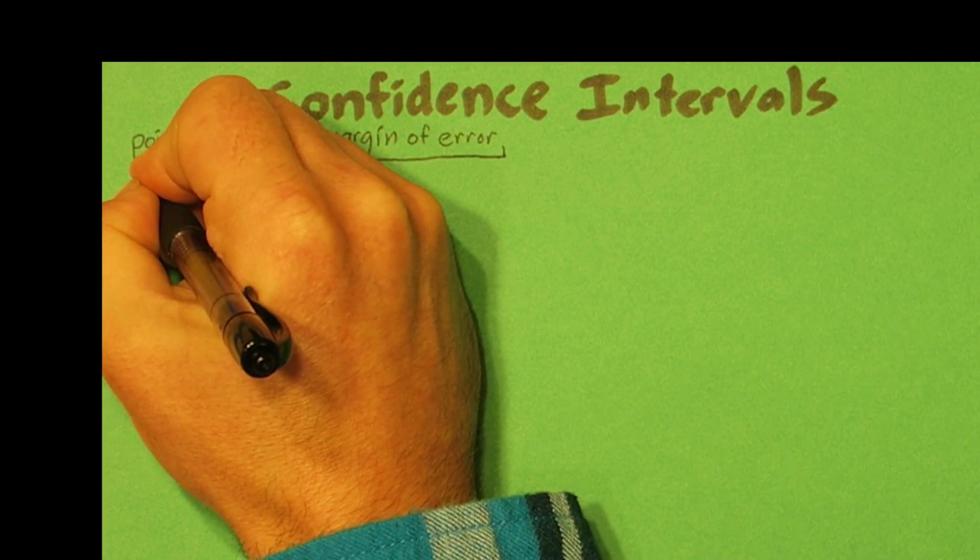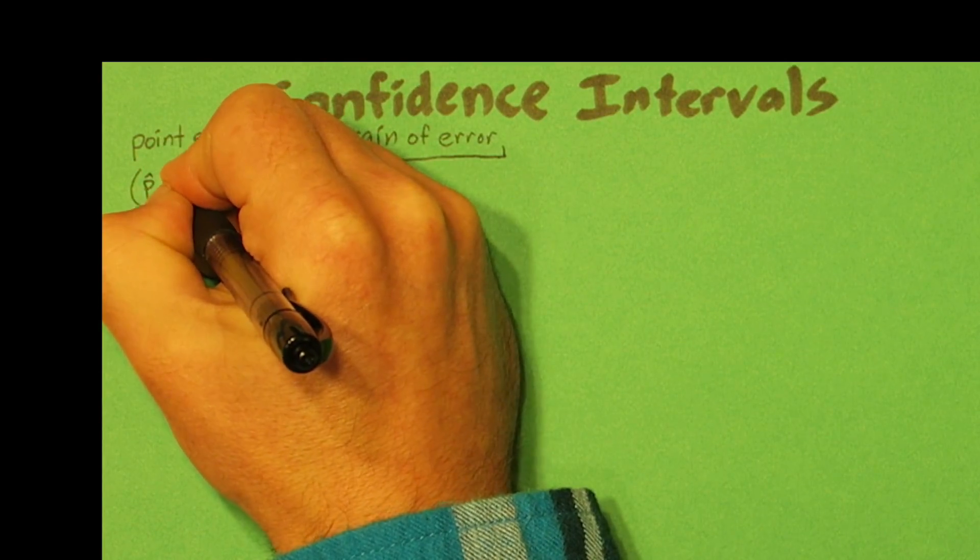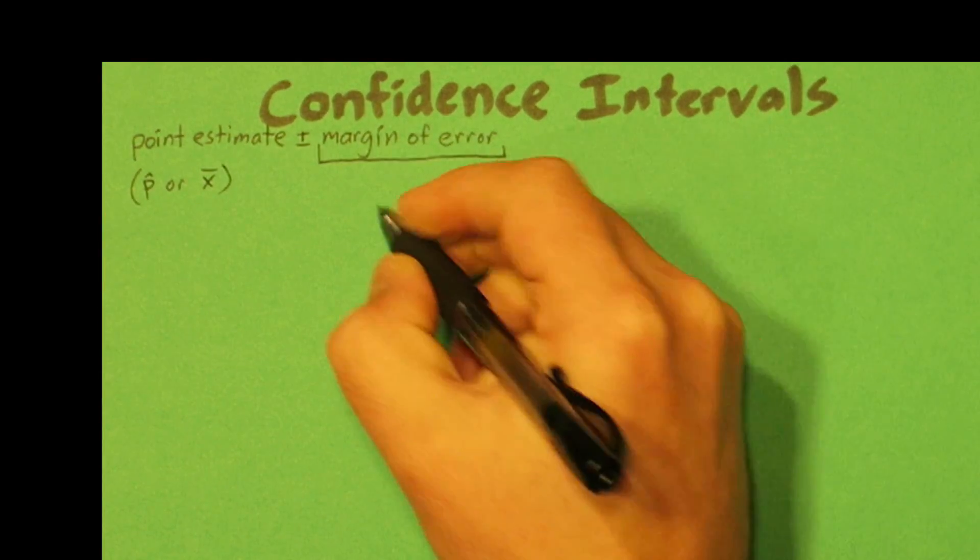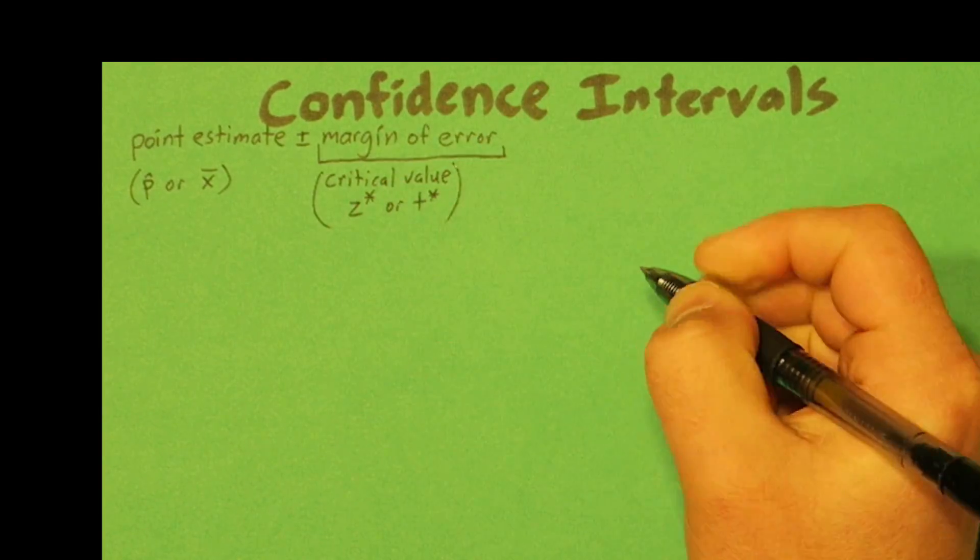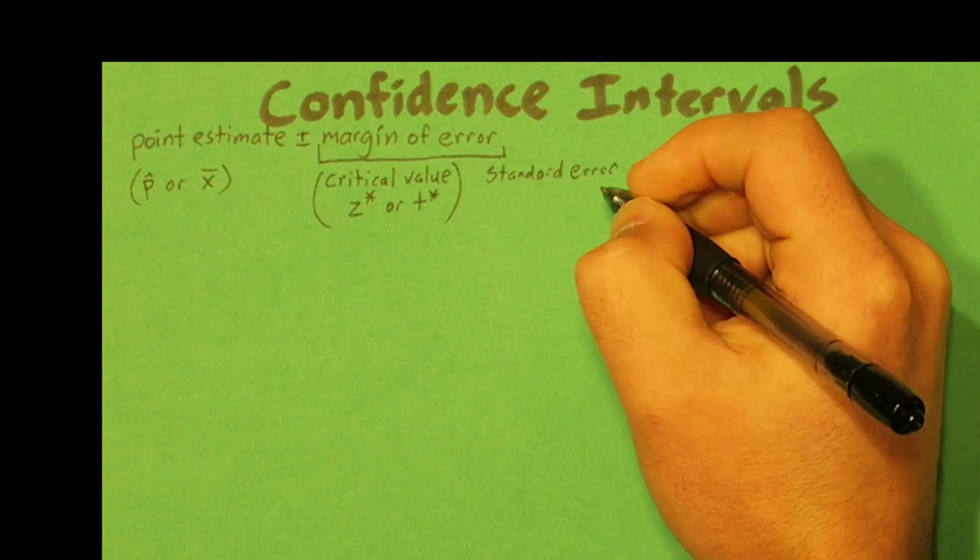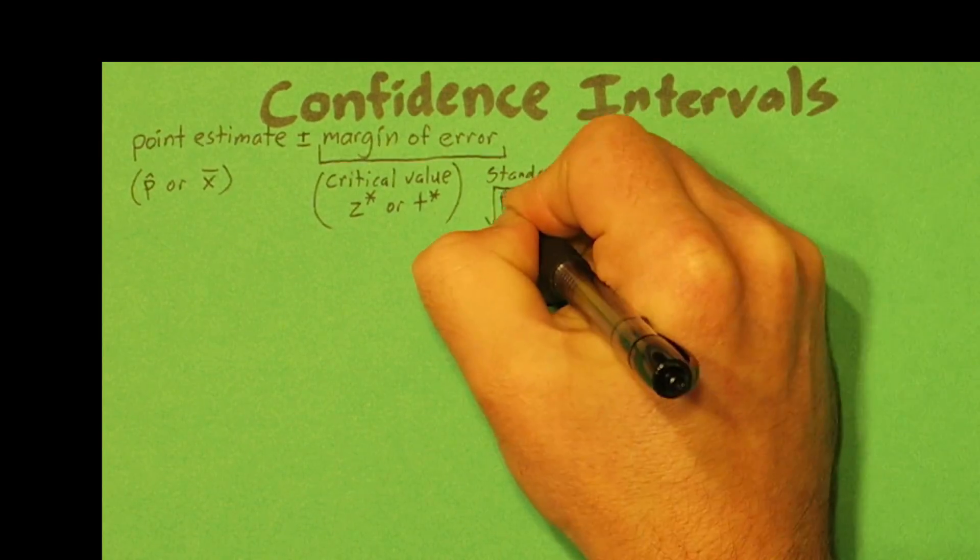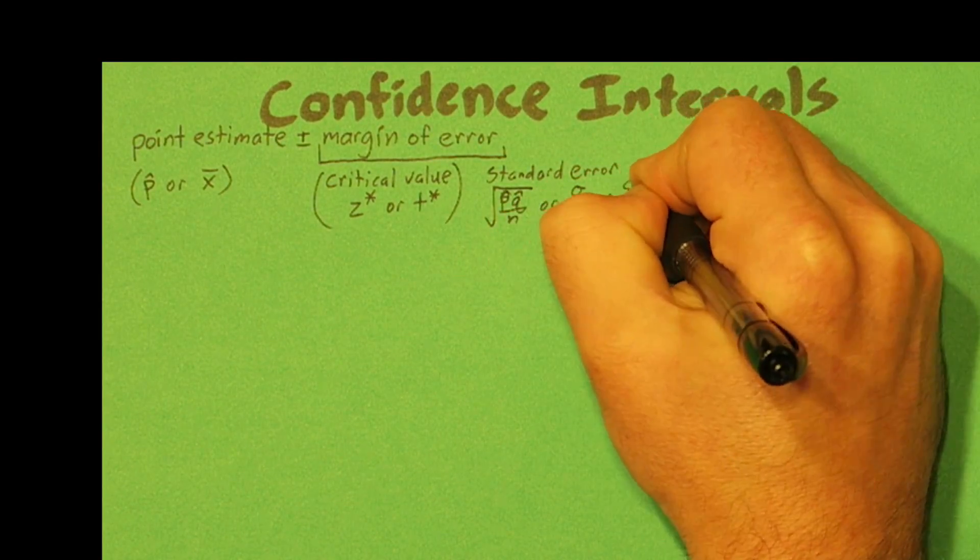Now the point estimate is usually p-hat, sample proportion, or x-bar, sample mean. And the margin of error consists of two things: a critical value, which is z star or t star, and a standard error, which could be any of these three different options.